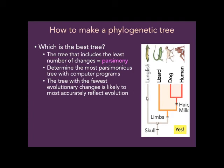The best tree is the one that includes the least number of changes — that's known as parsimony. The most parsimonious tree is the tree with the least number of changes. We do this using computer programs, but we can show simple examples so you can understand what the computer programs are doing.